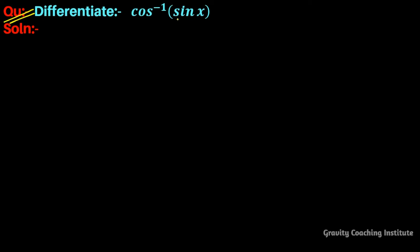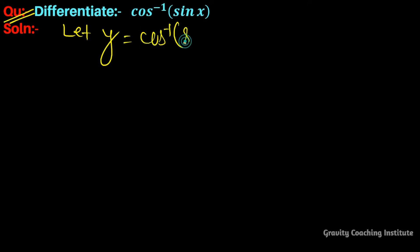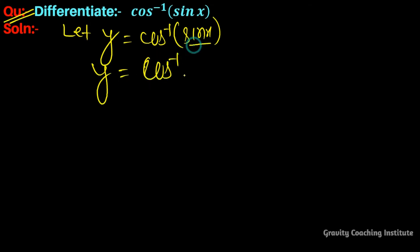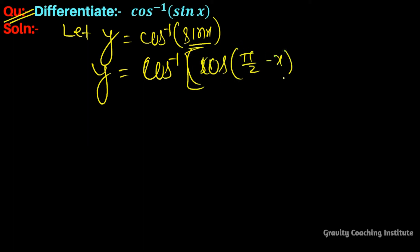Differentiate cos⁻¹(sin x). Let y = cos⁻¹(sin x). We can write sin x as cos(90° - x), so y = cos⁻¹(cos(90° - x)), which gives y = π/2 - x.